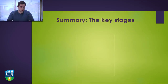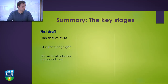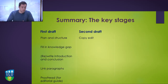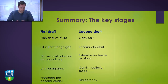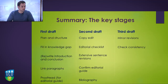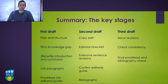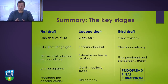To summarise the key stages: in your first draft, plan and structure, fill in the knowledge gap, rewrite your introduction and conclusion, link your paragraphs, and proofread. In the second draft, copy edit, do your editorial checklist, revise your sentences, confirm your editorial guide, and check your bibliography. In the third draft, make only minor revisions, check the consistency of the overall essay, and do a final proofread and bibliography check. If there are only one or two minor changes in the third draft, you can proofread your final submission, print it out, and if it's good to go, it's good to go.